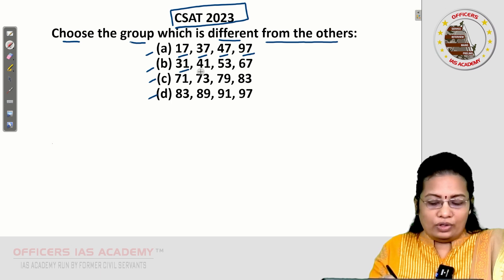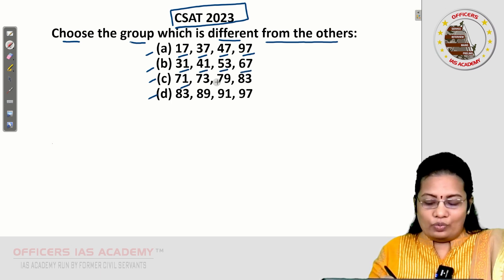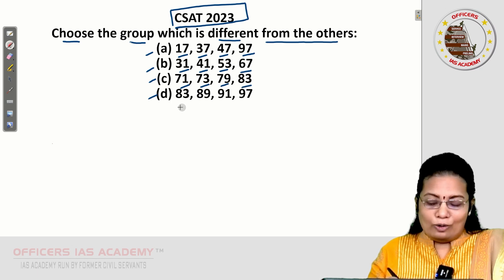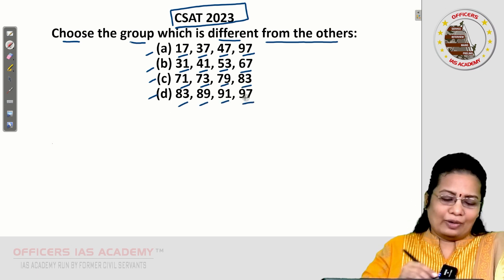Option B: 31, 41, 53, 67. Option C: 71, 73, 79, 83. Option D: 83, 89, 91, and 97.